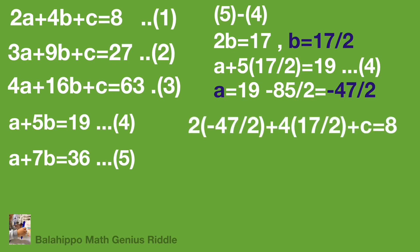Finally, substituting a and b into equation 1 to find c. Simplifying: -47 + 34 + c = 8, so c = 21.